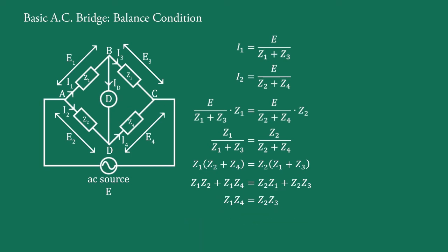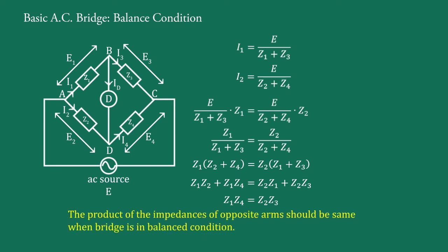From the figure, Z1 and Z4 are the impedances of the opposite arms, and Z2 and Z3 are also the impedances of the opposite arms. Hence we say that the product of the impedances of opposite arms should be equal when the bridge is in balanced condition.